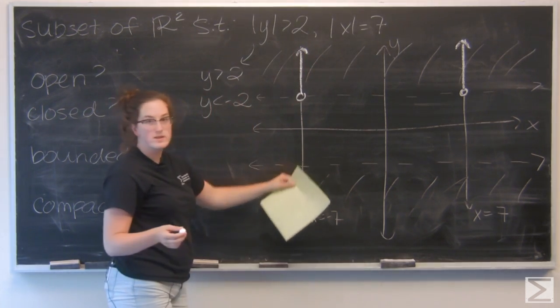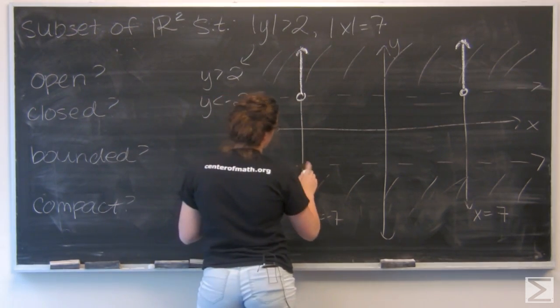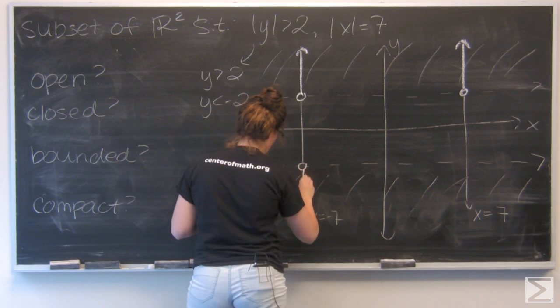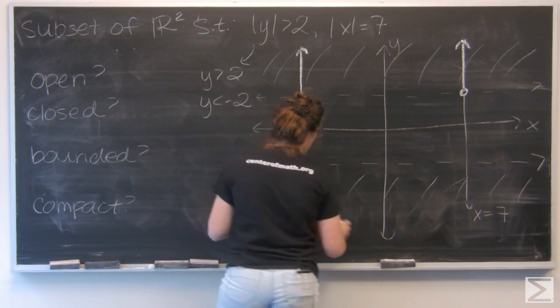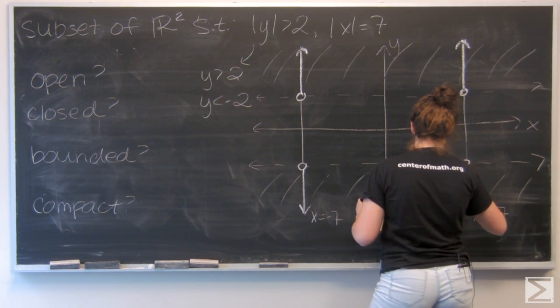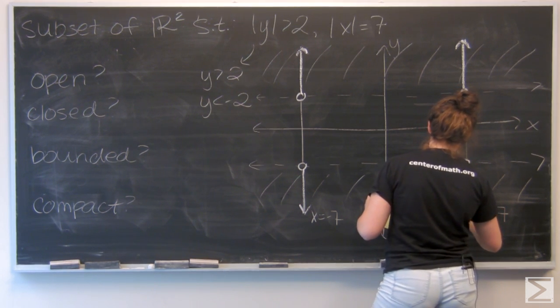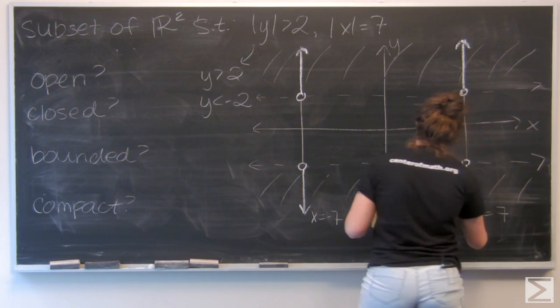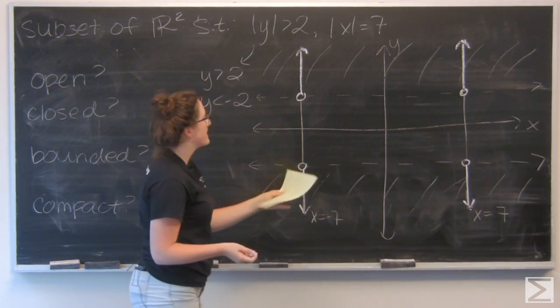And then the same down. So I have four little rays that make up my subset.